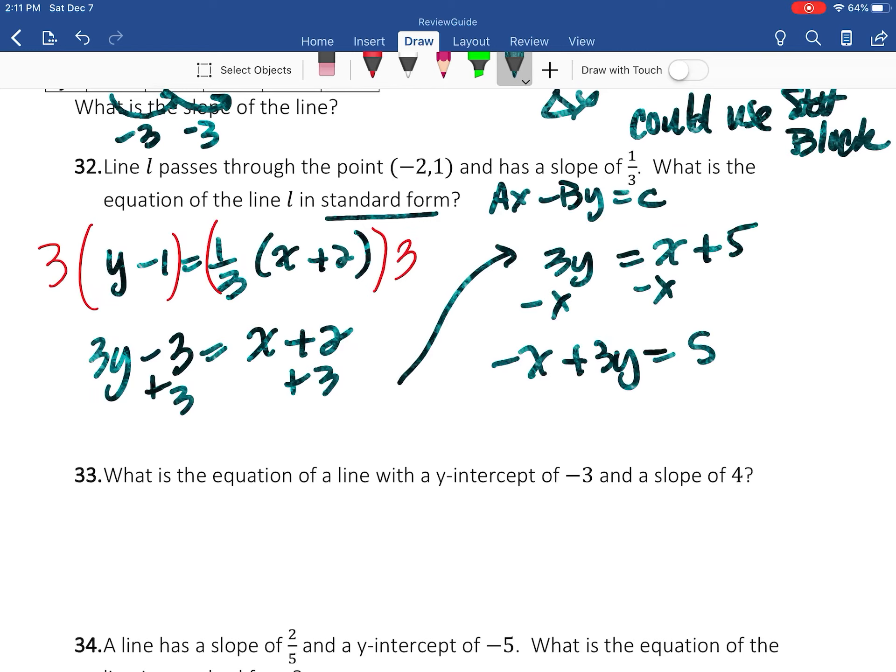Now I need to divide by -1, or rather just switch all my signs so that it falls in the standard form requirement that the A is positive. So that's going to become x - 3y = -5.